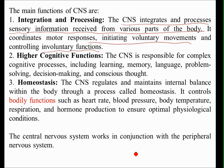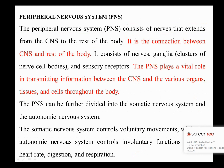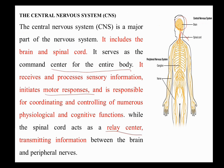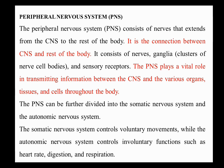The CNS works in conjunction with the peripheral nervous system. The central nervous system — consisting of the brain and spinal cord — covers the core, while the remaining nerves throughout the body make up the peripheral nervous system. The peripheral nervous system consists of nerves that extend from the CNS to the rest of the body. It consists of nerves, ganglia (clusters of nerve cell bodies), and sensory receptors, and plays a vital role in transmitting information between the CNS and the various organs, tissues, and cells throughout the body.